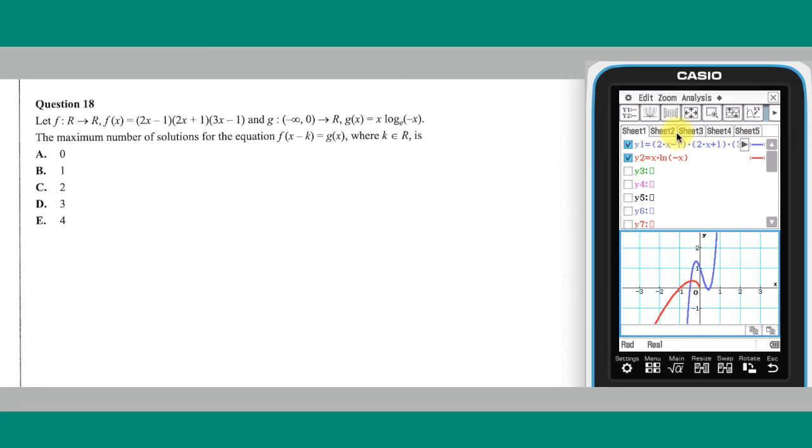As k takes increasing positive values, the curve will move right until, for some k value, the two graphs will intersect at three points, indicating that the equation in question will have three solutions. To confirm this result, a graph of f of x take one can be drawn.